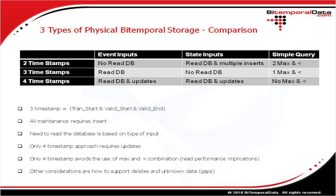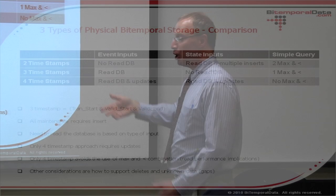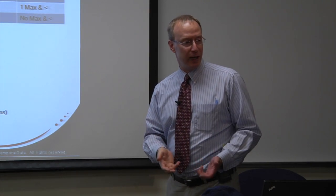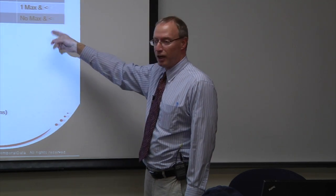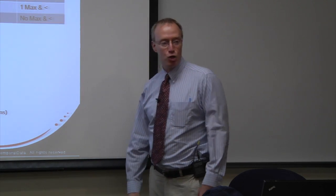For the three-timestamp approach with event-based inputs, you have to read the database, but it's not too bad. For state-based inputs, you don't need to read the database — you can just insert the data directly. For the four-timestamp approach, you need to read the database and do some updates for both event-based and state-based inputs. So you pay the penalty on insert, but you reap the benefit on read — you don't need those combinations of max and less-than; you can just constrain between two values. The read performance is much better.